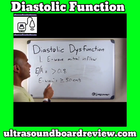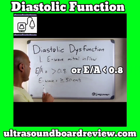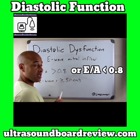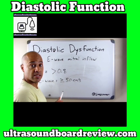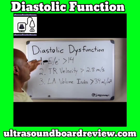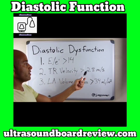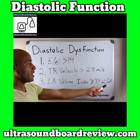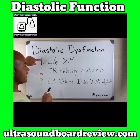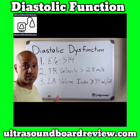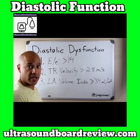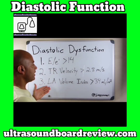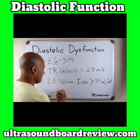Now, if your E to A is greater than 0.8 and your E wave mitral inflow velocity is greater than or equal to 50 centimeters per second, there are three criteria you have to assess: E to E prime greater than 14, TR velocity greater than 2.8 meters per second, and LA volume index greater than 34 milliliters per square meter. If the patient is negative for two out of the three, they have normal diastolic function or grade 1. If positive for two out of the three, the patient has grade 2 diastolic dysfunction.